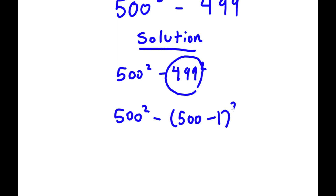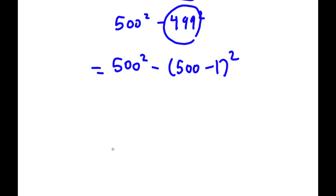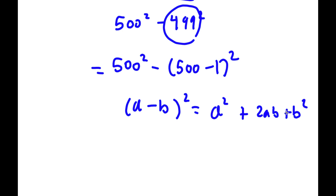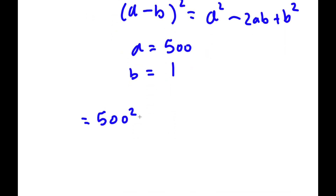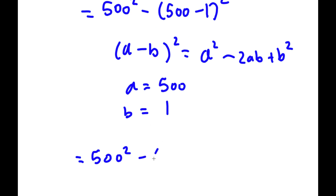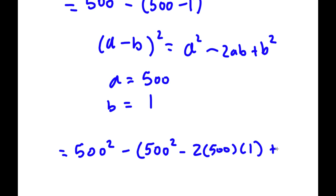...500 minus 1. So now if I have something in the form (a minus b) squared, this is equal to a squared minus 2ab plus b squared. In this case a is 500 and b is 1.